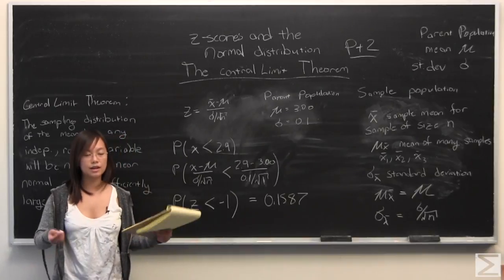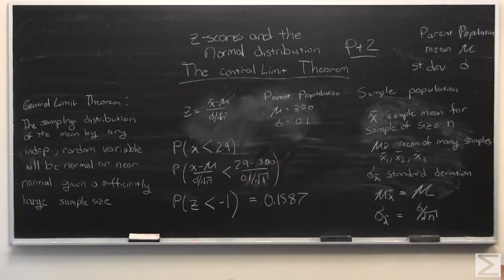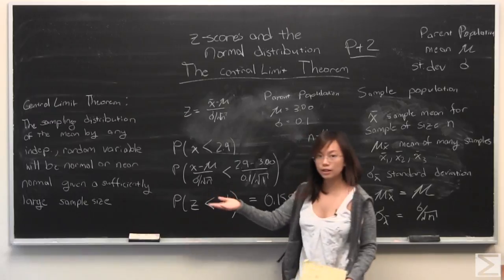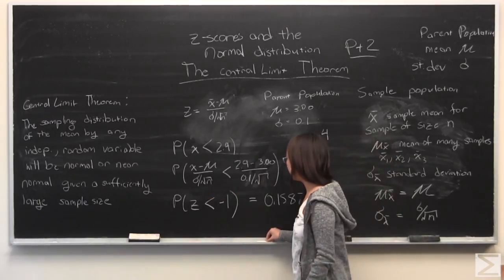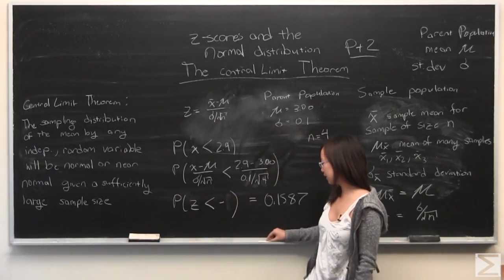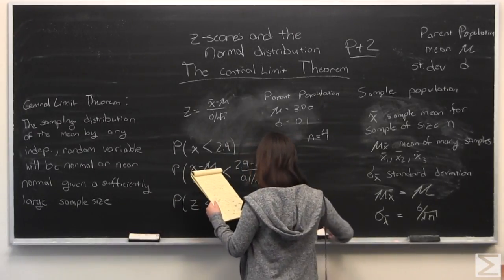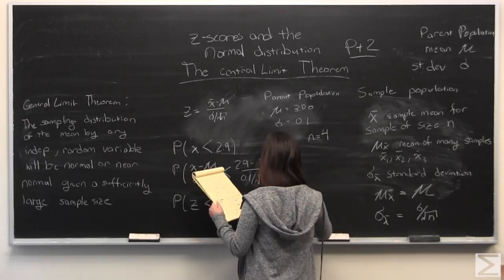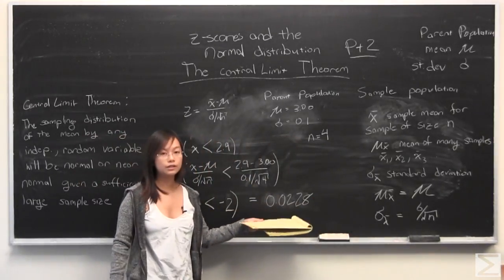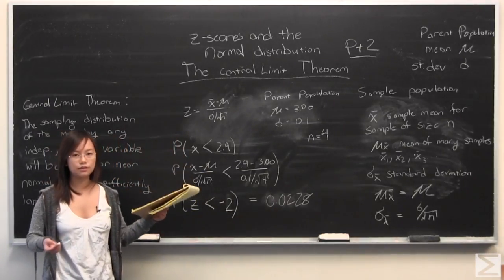If you instead had a sample of you and three friends, so you had four people instead, then instead of using 1 here, you would use 4. This would change from negative 1 to negative 2. And if you calculated this with a z-table, you would find that your probability then becomes 0.0228.